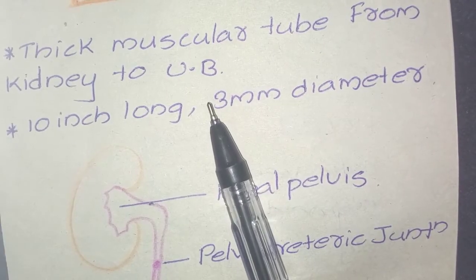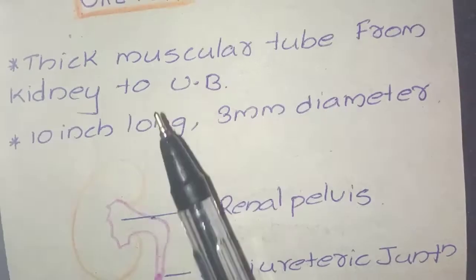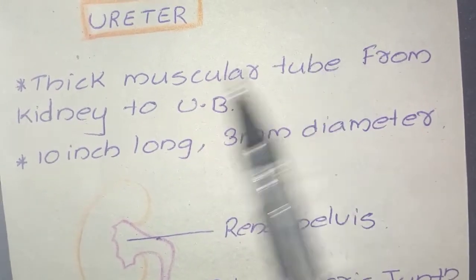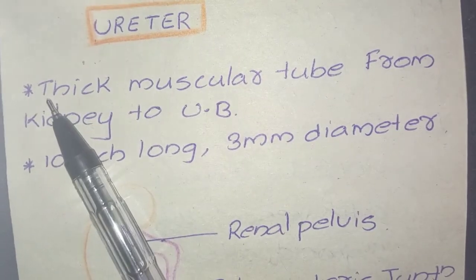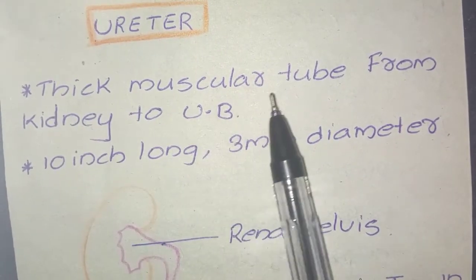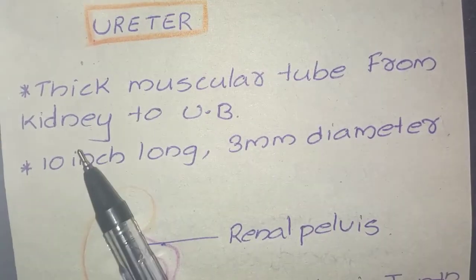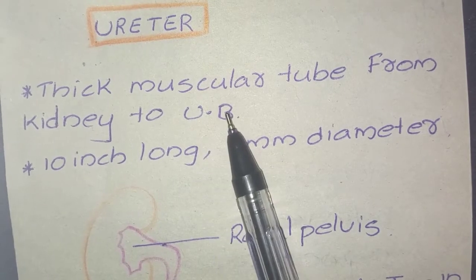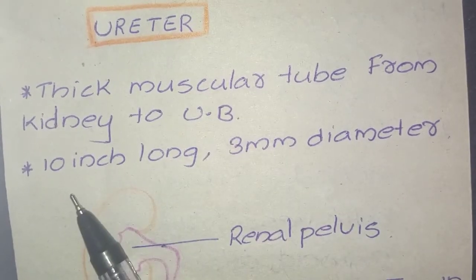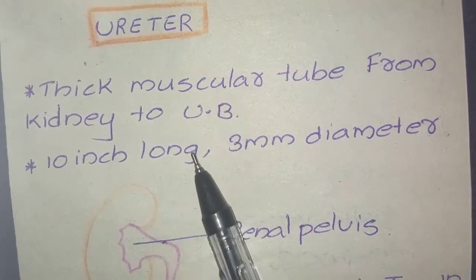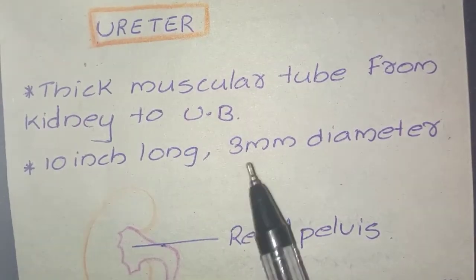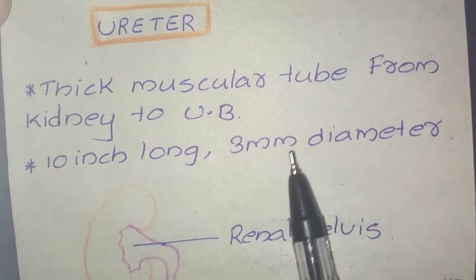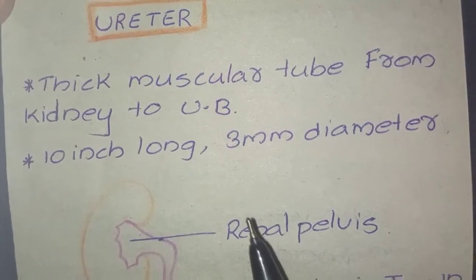For the introduction of the ureter, it is a thick muscular tube from the kidney to the urinary bladder. For the dimensions, it is 10 inches long and 3 millimeters in diameter.